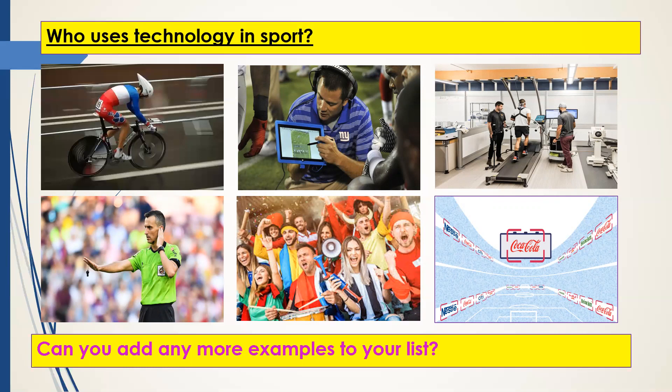Give yourself a few minutes to think a little bit outside the box. Think of some different examples from different sports, see what other things you can add to your list. Pause the video and see what you can add, and maybe make a note of which groups the different types of technology apply to. Some things might apply to more than one group, but others are very much specific. Pause the video and we'll continue in a few minutes.